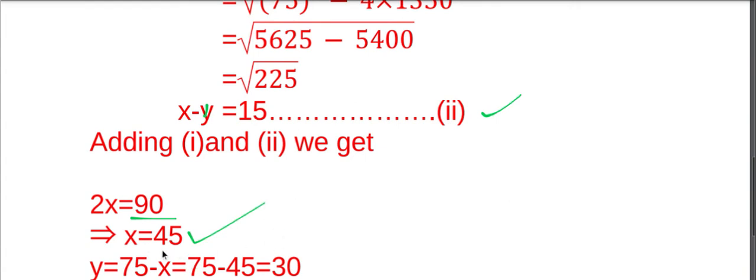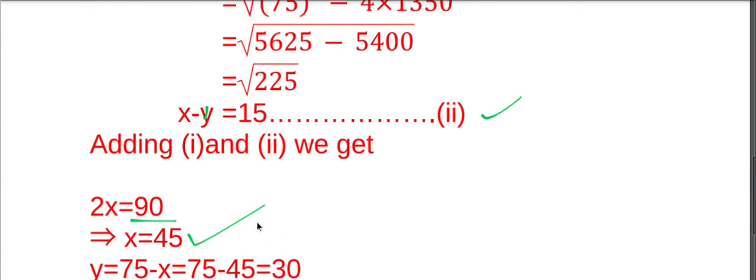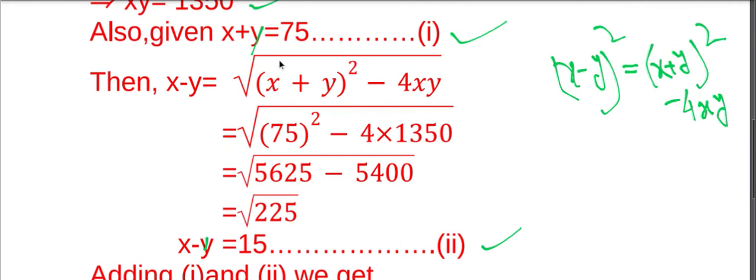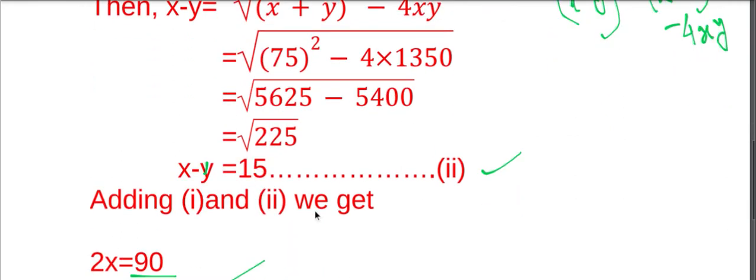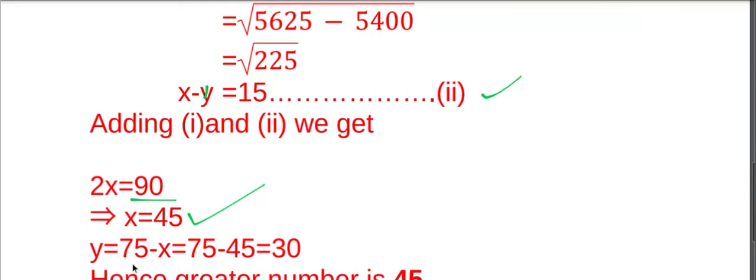If we put the value of X in any of the two equations, let's use equation number one, then Y equals 75 minus X, that is equal to 75 minus 45, that is equal to 30.